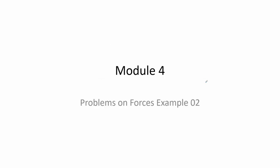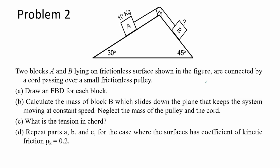Here we have a sample problem for module 4. Here we have two blocks A and B on a frictionless surface shown in the figure, connected by a cord of negligible mass over a frictionless pulley.